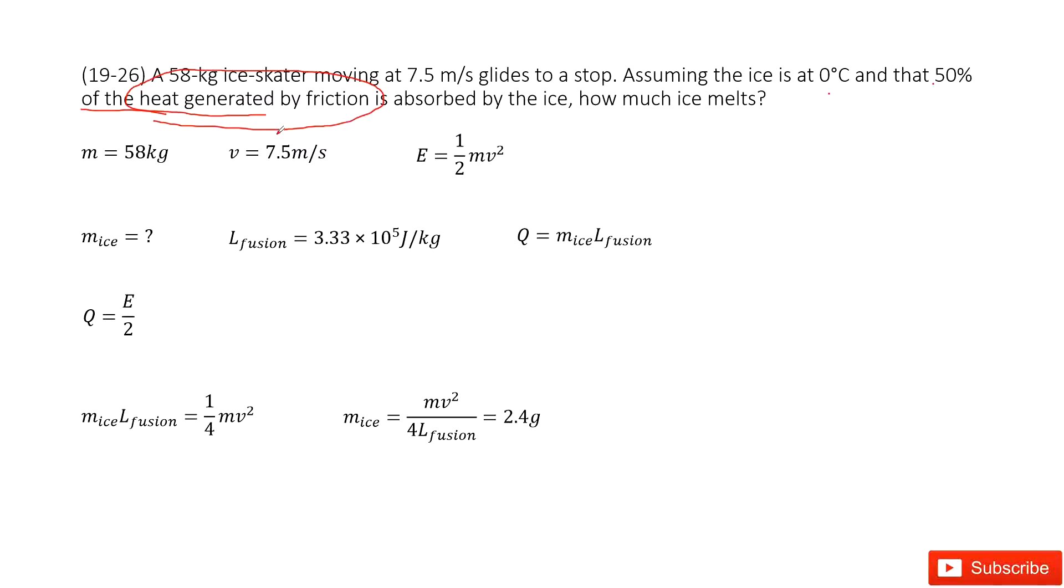So this energy is just 1/2 mv squared, the kinetic energy. And this heat tells us the heat absorbed by the ice is just half. So the heat absorbed by the ice, we denote Q, just equals half the kinetic energy: E over 2. This comes from this sentence.